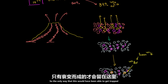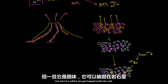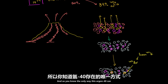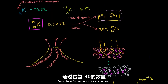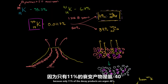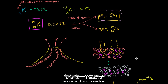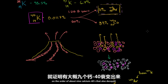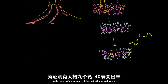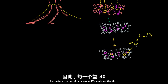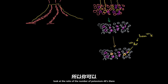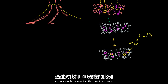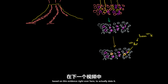The only way this argon-40 could have been trapped is: while it was liquid it would seep out, but once it's solid it can get trapped inside the rock. So you can look at the ratio. Because only 11% of the decay products are argon-40, for every one argon-40 there must be on the order of about 9 calcium-40s that also decayed — meaning 10 original potassium-40s for every argon-40. So you can look at the ratio of potassium-40 today to what must have been there originally to actually date it.